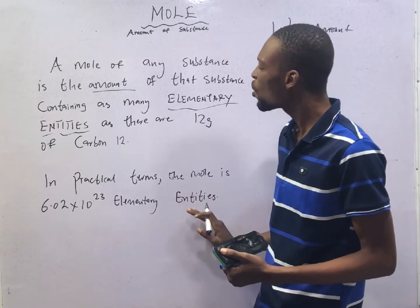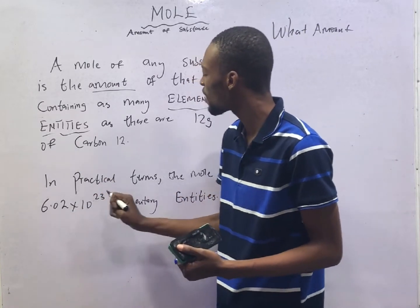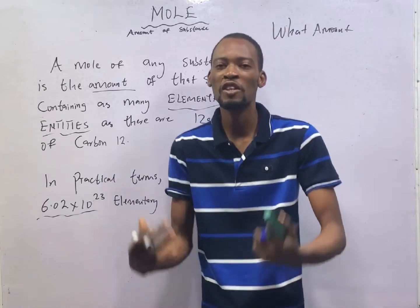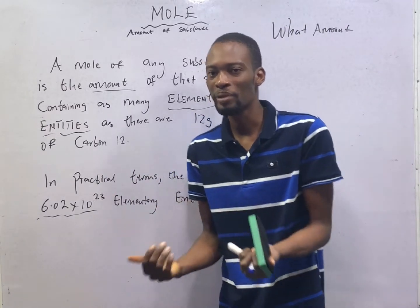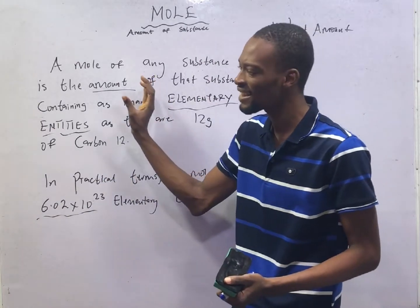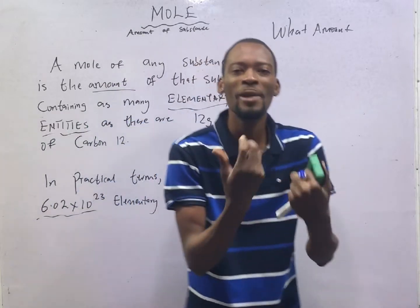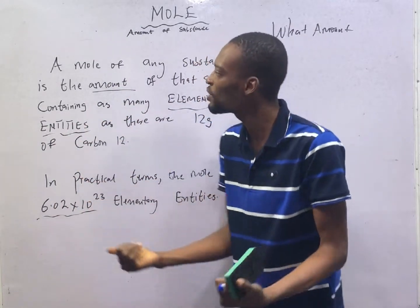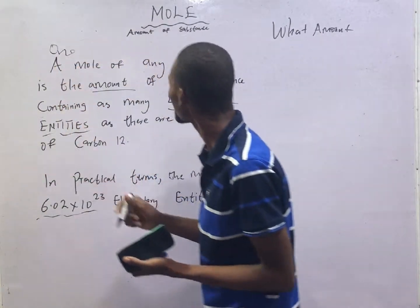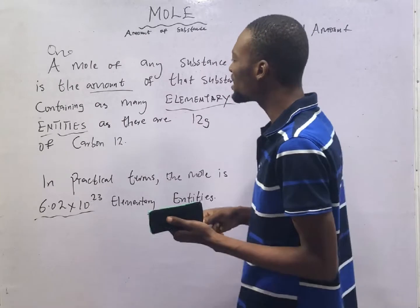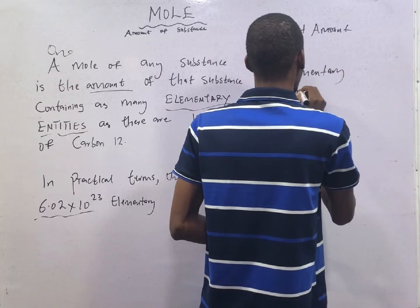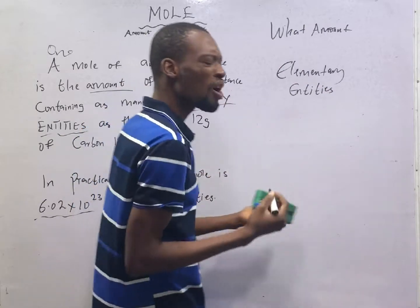In practical terms, the mole is 6.02 × 10²³ elementary entities. From here we can say that a mole is the amount of substance that contains Avogadro's number, because Avogadro's number is 6.02 × 10²³. We know that the unit for measuring amount of substance in chemistry is mole, and a mole of a substance is the amount of that substance containing as many elementary entities — so what are elementary entities?